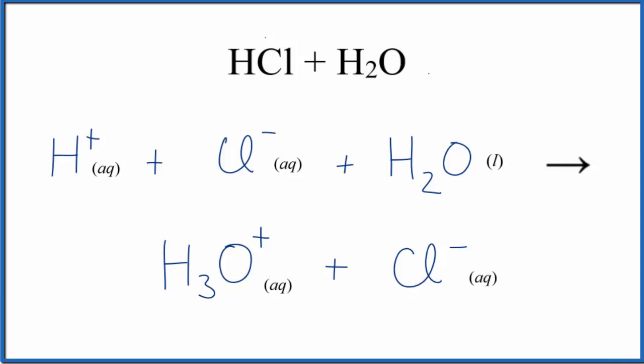At this point, we have a total ionic equation. We can cross out the spectator ions. They appear on both sides of the equation, so we can cross these out here, and that leaves us with our net ionic equation.